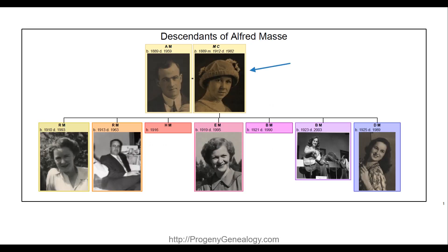My grandmother, Connie Cahoon, emigrated from Scotland as a young lass. In the early 1900s, she arrived in Canada alone and unchaperoned. What could go wrong?